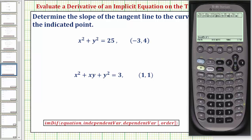Now we'll enter the equation, comma, the independent variable, comma, the dependent variable. Because we determine the slope of the tangent line using dy/dx, x is the independent variable and y is the dependent variable.